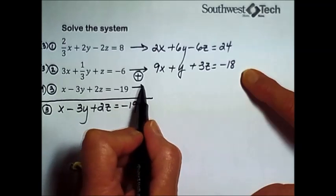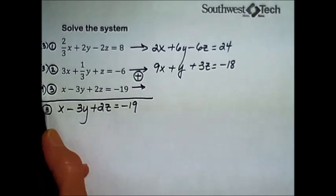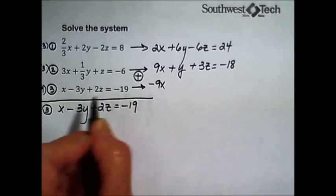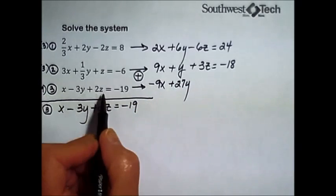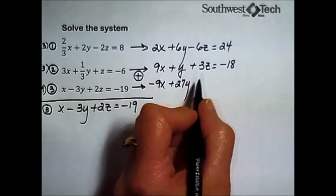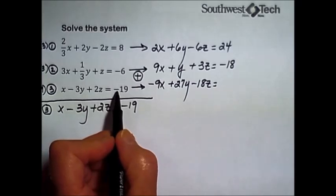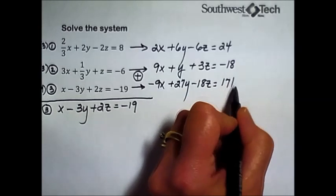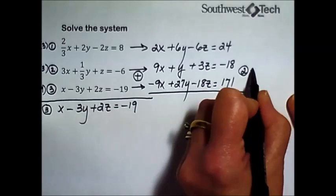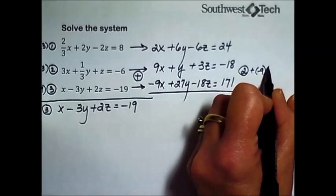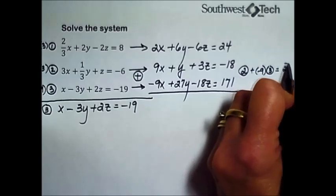So let's see what we get by multiplying every term by negative 9. We are going to get negative 9 times x is negative 9x. Negative 9 times negative 3y is positive 27y. Negative 9 times positive 2z is negative 18z. And negative times a negative is positive; 9 times 19 is 171. I'm now adding equation number two plus negative 9 times equation number three, and I'm going to call it the new equation number two.